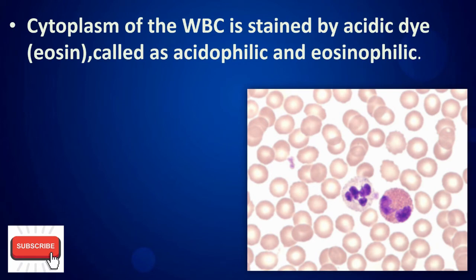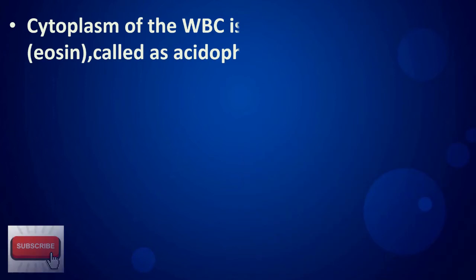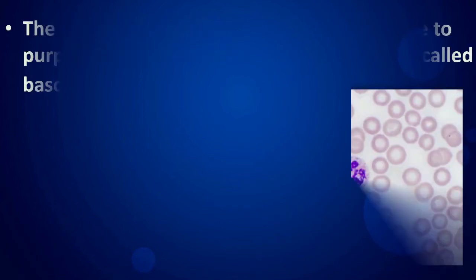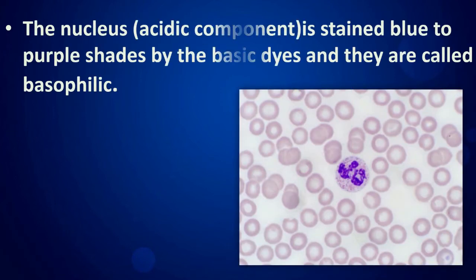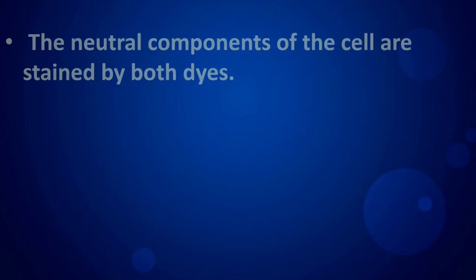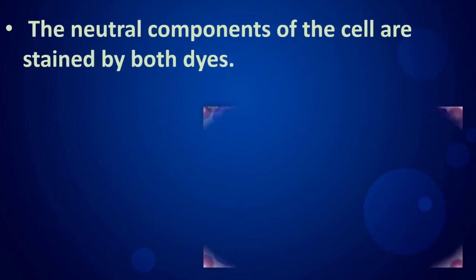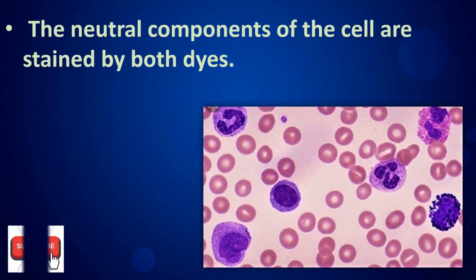The cytoplasm stained by eosin is called acidophilic or eosinophilic. The nucleus, being an acidic component, is stained in blue to purple shades by the basic dyes and is called basophilic. The neutral components of the cell are stained by both dyes.